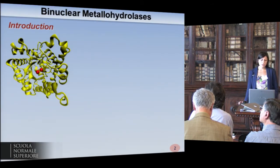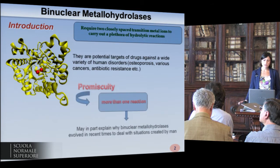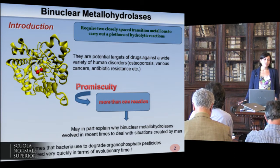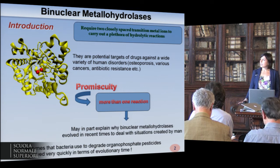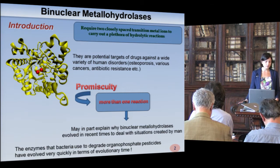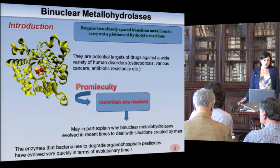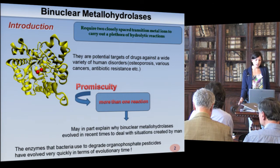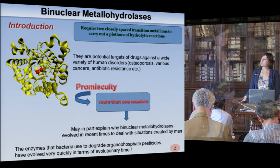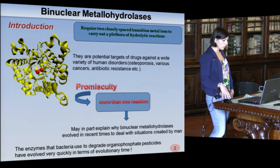What about binuclear metallohydrolases? This large family of enzymes requires two metal ions in the active site to carry out a plethora of hydrolytic reactions. Since they are involved in several vital reactions, it's not surprising that they are potential drug targets against a wide variety of human disorders, including osteoporosis and various kinds of cancer. They also tend to be promiscuous, catalyzing more than one reaction, which may explain why they have evolved to deal with situations created by men, like organophosphate pesticides that appeared only 70 years ago.